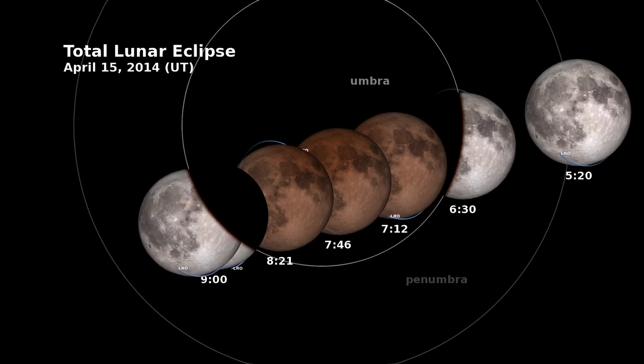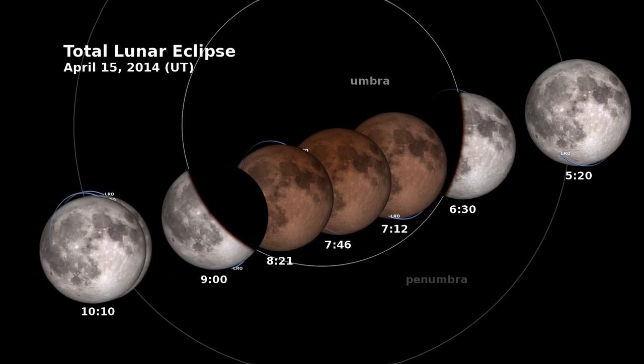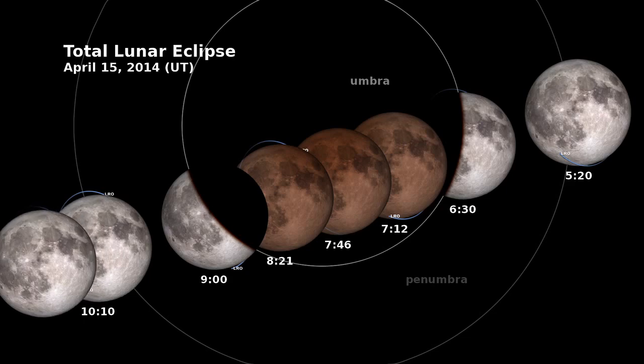When the moon comes out of the Earth's umbra, it begins to look as we've always seen it, this beautiful bright gray orb in the sky.